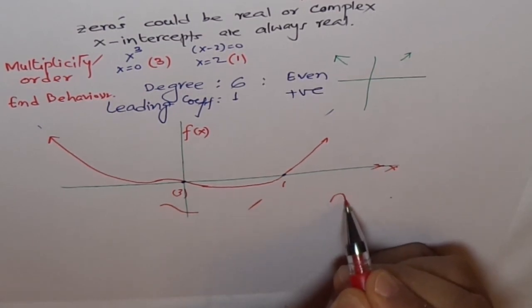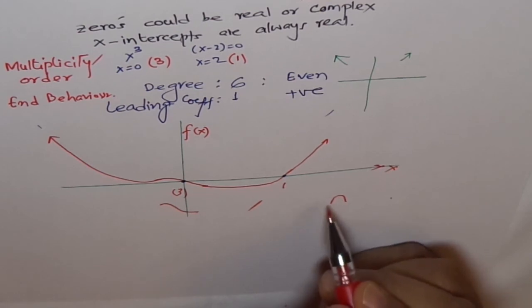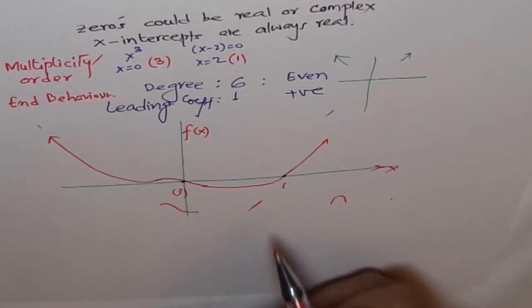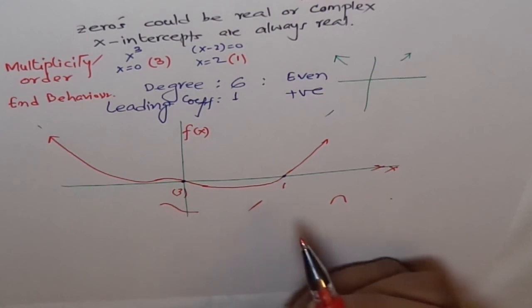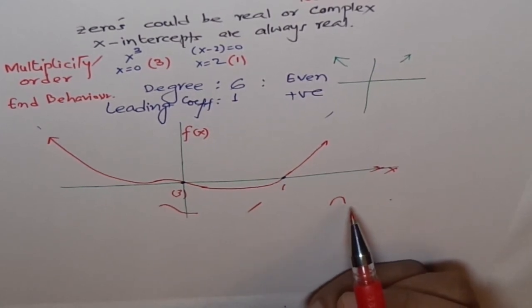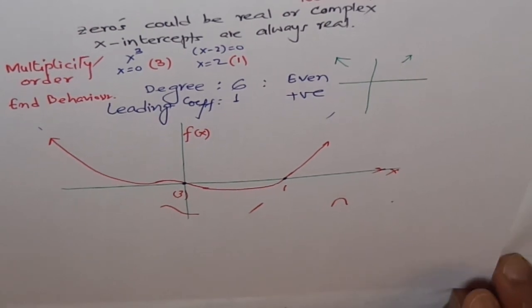If the degree would have been two or four, it will go like a parabola, like a turn. It will bounce back. So if the degree is odd, it actually goes through. And if degree is even, it bounces back off a zero.